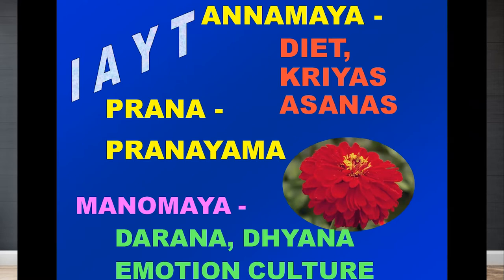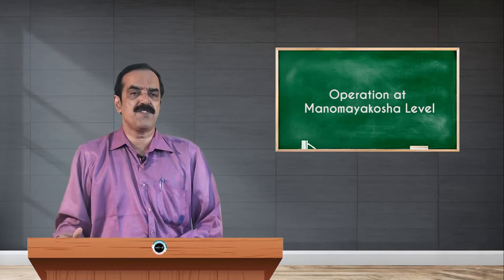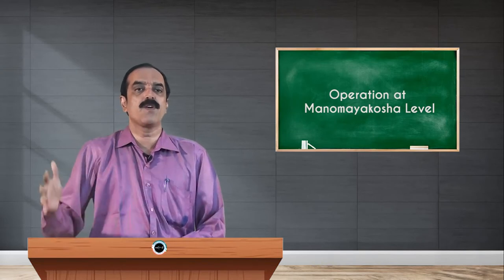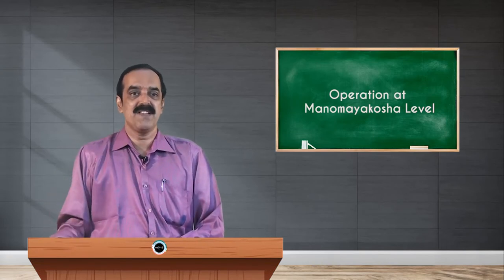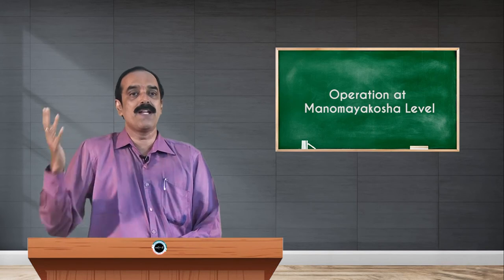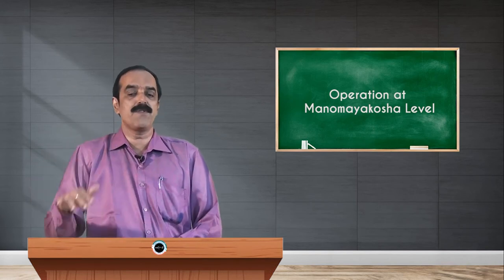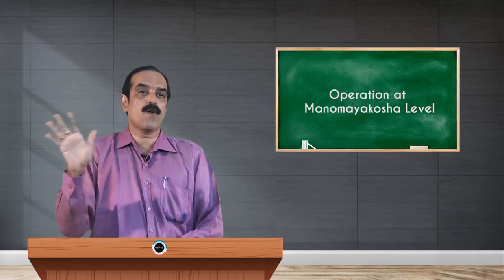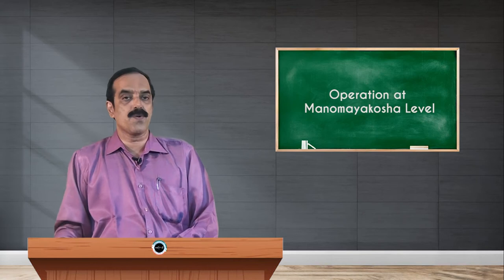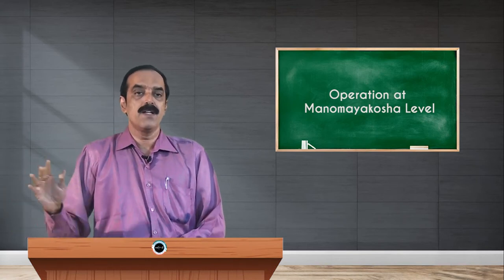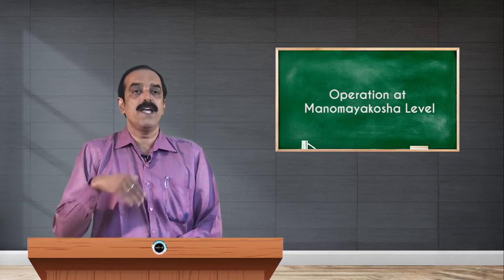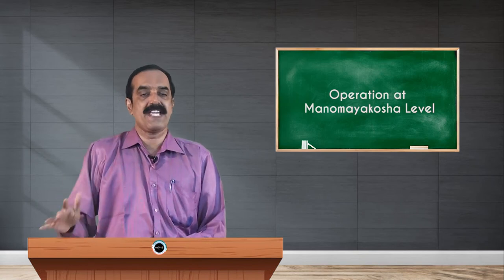Children have very less concentration, and when their concentration is low, they cannot focus on one particular object. They have a lot of energy, so we give them dynamic yogasanas to release that energy, and then we can give them relaxative asanas. If we give only relaxative asanas first, their energy is too high and their concentration is poor, so they are unable to perform them. In certain conditions like obesity, a similar logic applies.